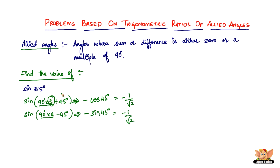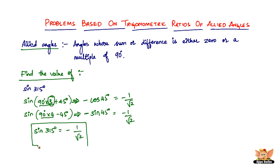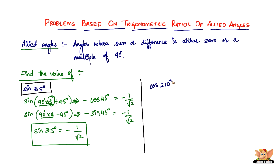No matter which method you follow — writing 315 as 270 + 45 or 360 − 45 — the answers are the same. Therefore, the value of sine 315 degrees is negative 1 by root 2.